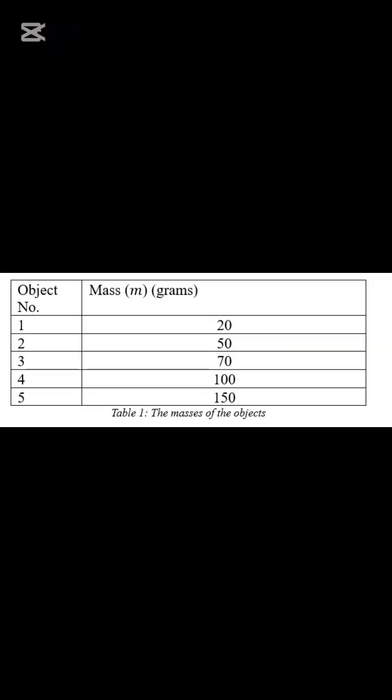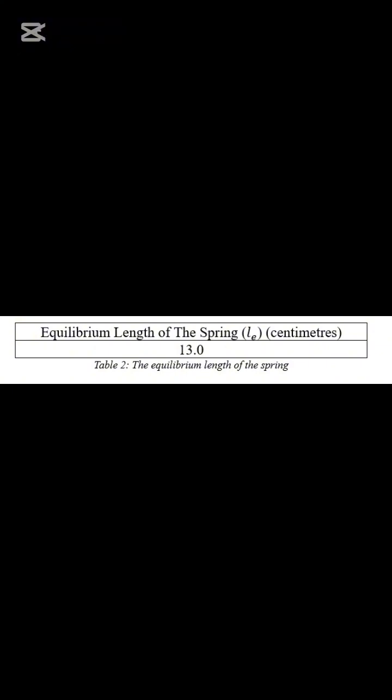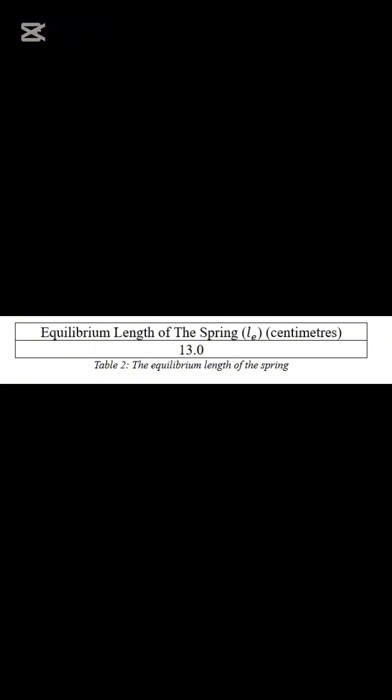In our experiment, we picked these masses, and this was the equilibrium length of our spring. We had these as the length differences. This is the table of the period values. We repeated the process 10 times for each mass and took the average of the period values to have a better result.